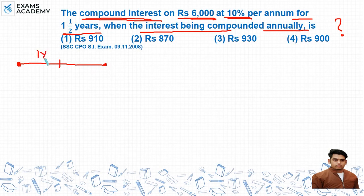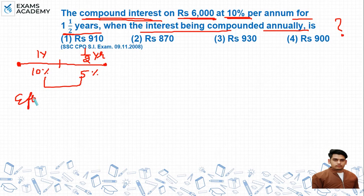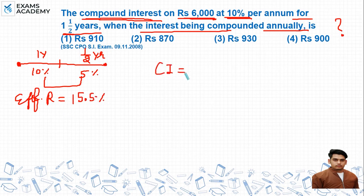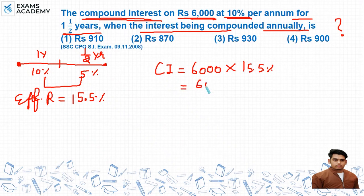If we look at the rate: in the first year the rate is 10%, and for the second half year, the rate will also be half — so 10% ka half hoga 5%. Now from here we find the effective rate. The effective rate percent comes out to be 15.5%.